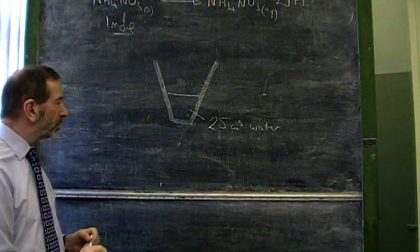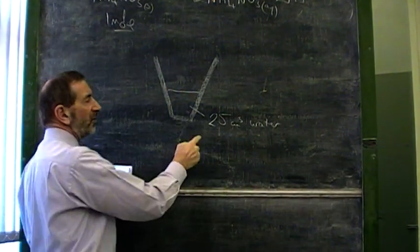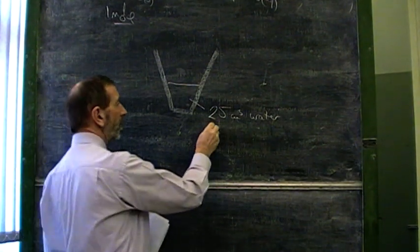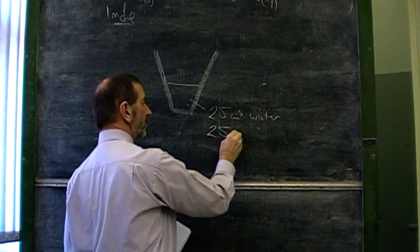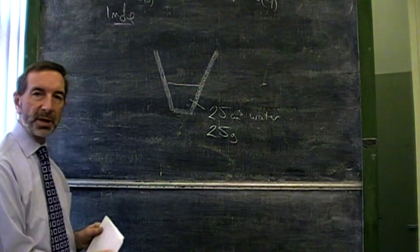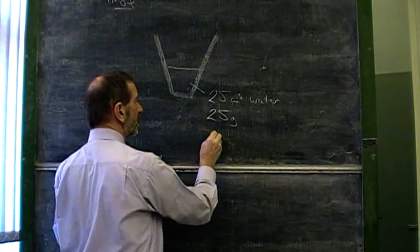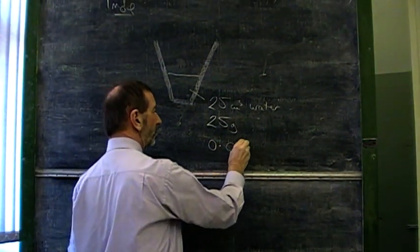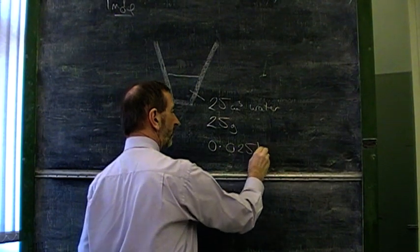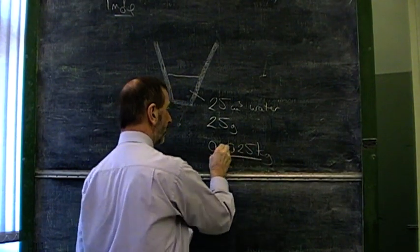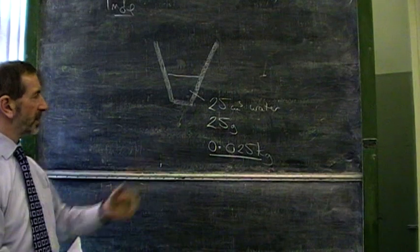Now, when it comes to the calculation of this, this is allowed to be expressed in terms of its mass, which is 25 grams. But the mass has to be expressed in kilograms, which is 0.025 of a kilogram. That's the number we'll have to use to represent the water.